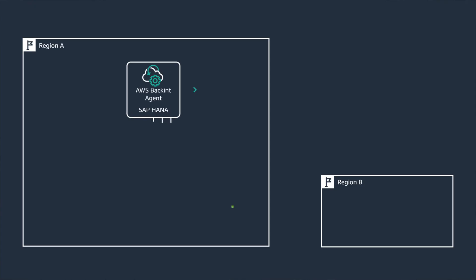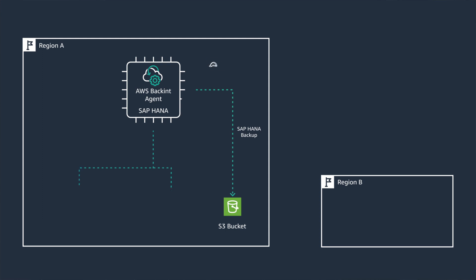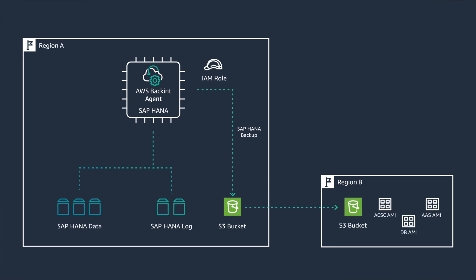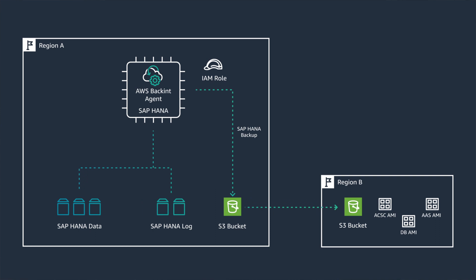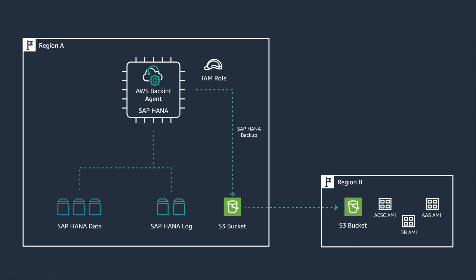Finally, let's talk about disaster recovery. This is when you really need a backup plan. By taking Amazon Machine Images, or AMIs, of your SAP production systems in the primary region and copying them to a secondary region, you can restore SAP systems in the event of a disaster. This is known as cold or passive DR.